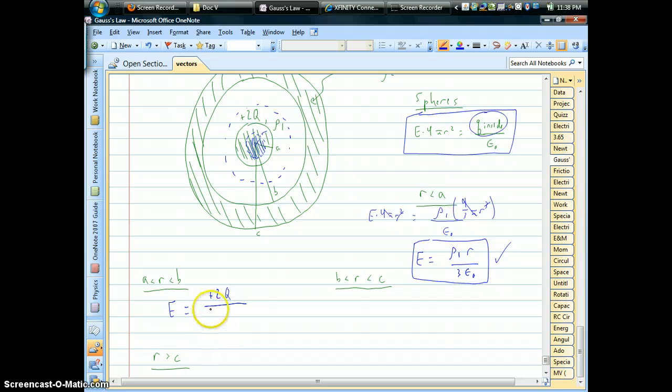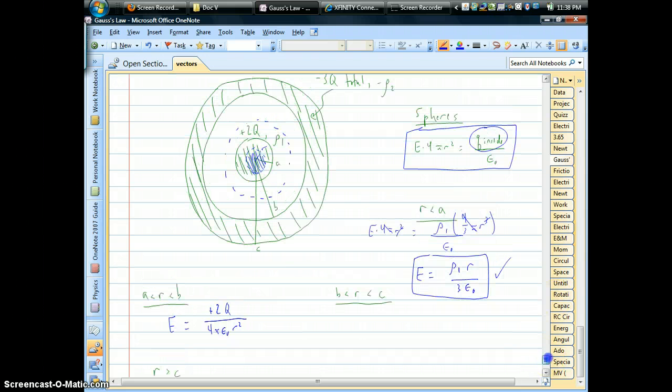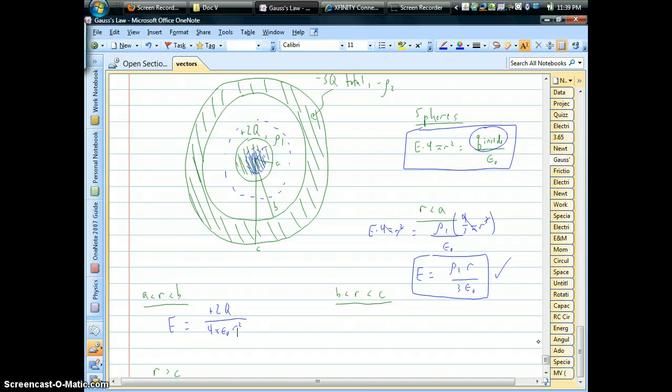So here, this result is going to look like a point charge. It's 1 over r squared. It wouldn't matter if the ball is a conductor or a non-conductor. When you're outside of it, it's just the total charge. It all looks the same.